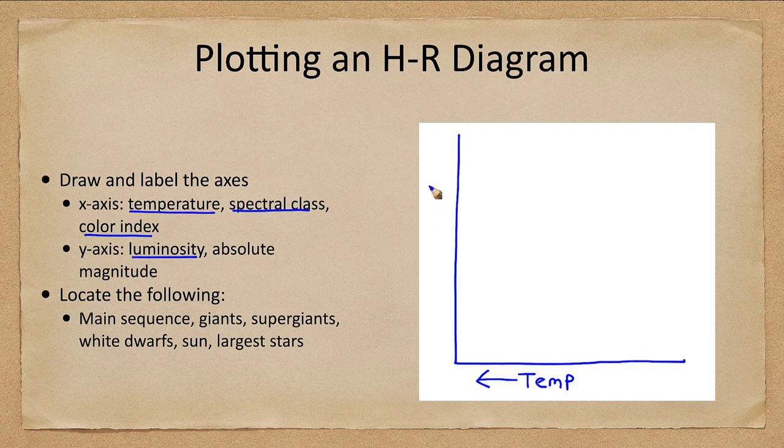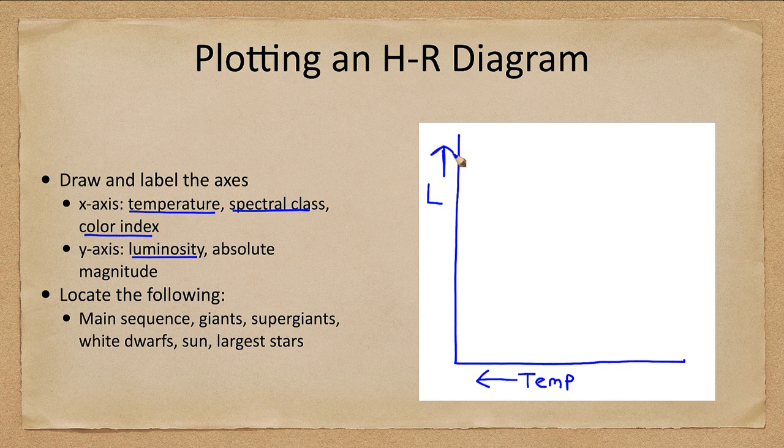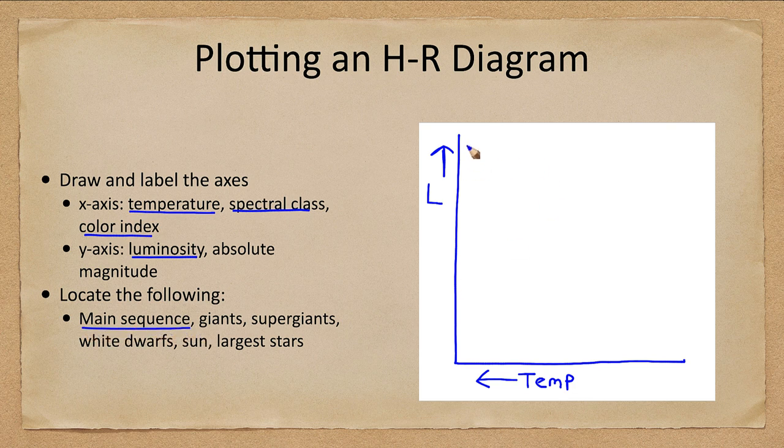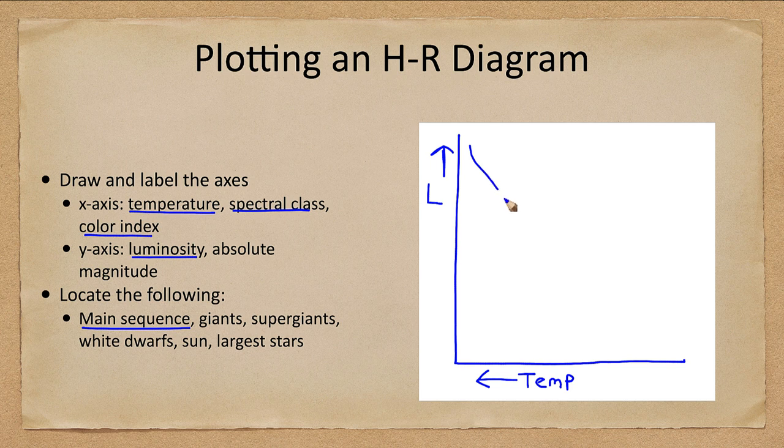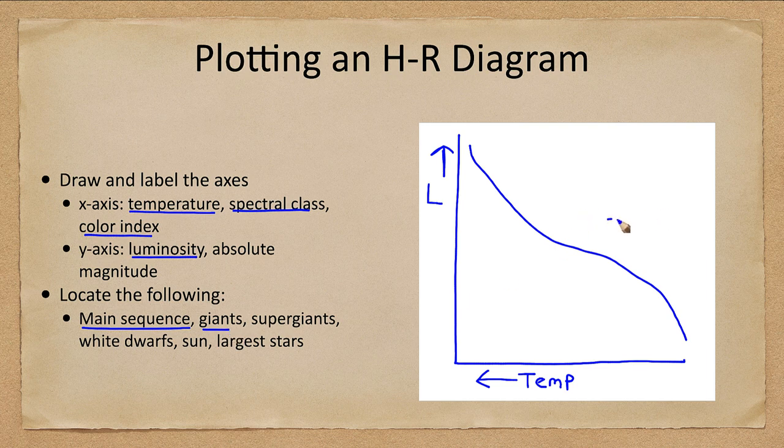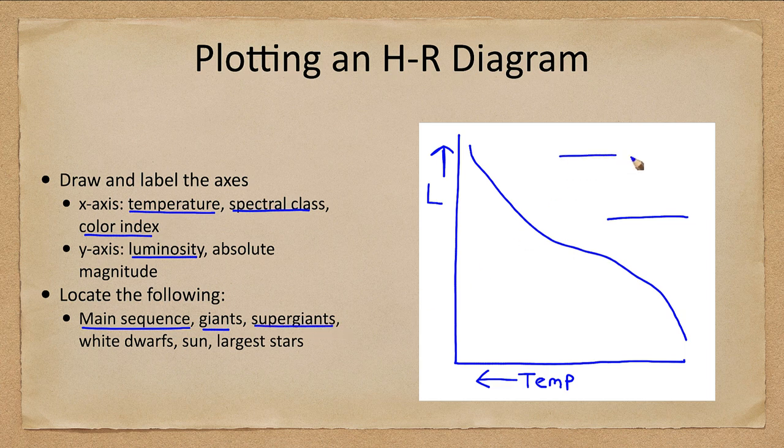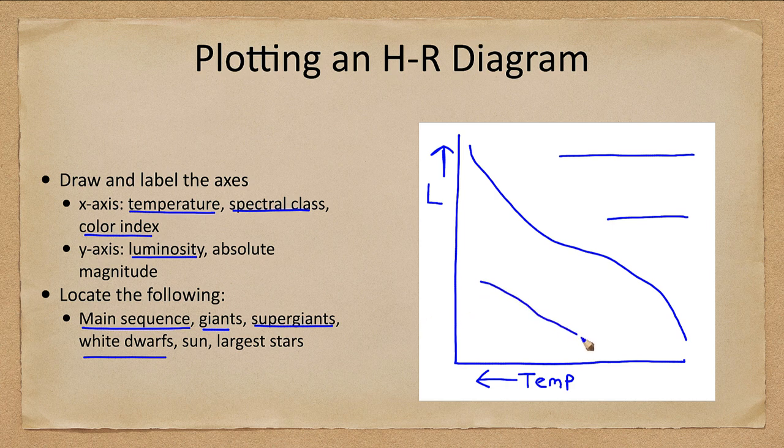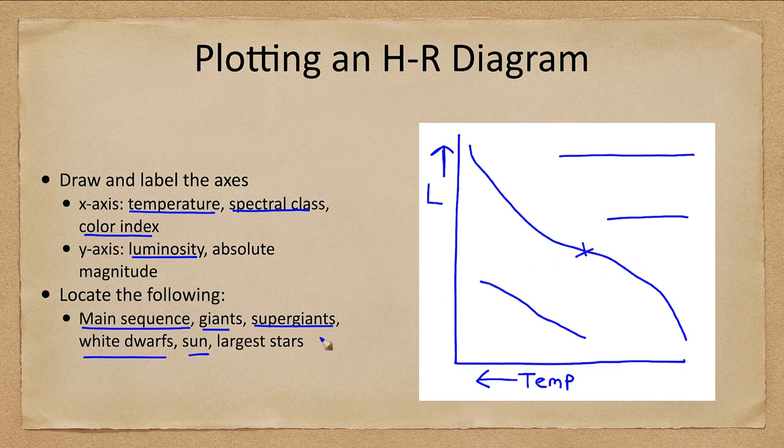On the y-axis we plot the luminosity, and the luminosity increases going up as you might expect. When we plot this, we can locate the main sequence of stars going from the upper left down to the lower right. The giant branch is above the main sequence off to the right, the supergiants above that, the white dwarf stars down below the main sequence, the Sun maybe somewhere towards the middle, and the largest stars in the very upper right hand corner.